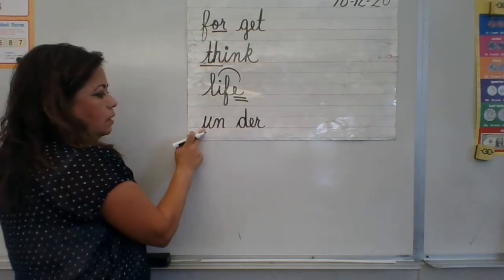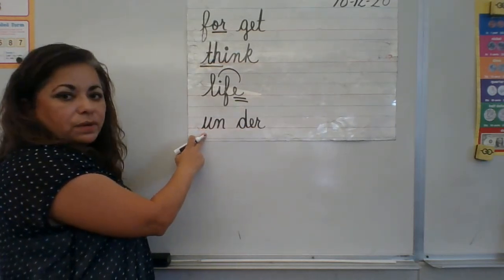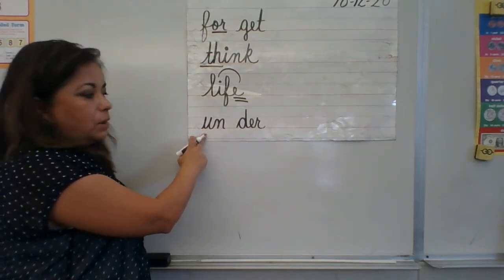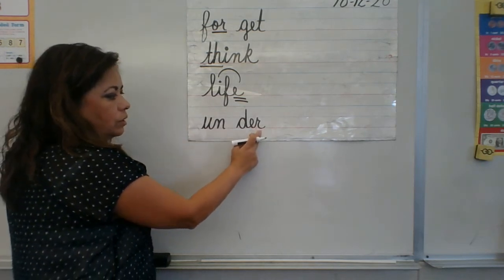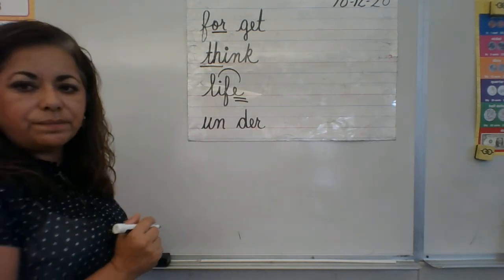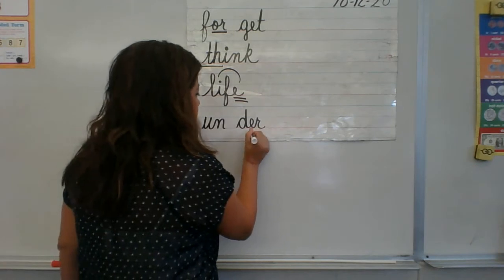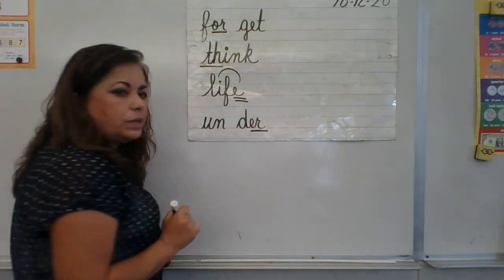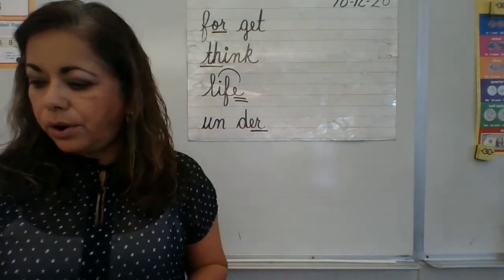'U' is the first sound of this vowel, we don't need to mark it. Under — there's a multi-letter phonogram there: 'er' as in her. It has one sound.